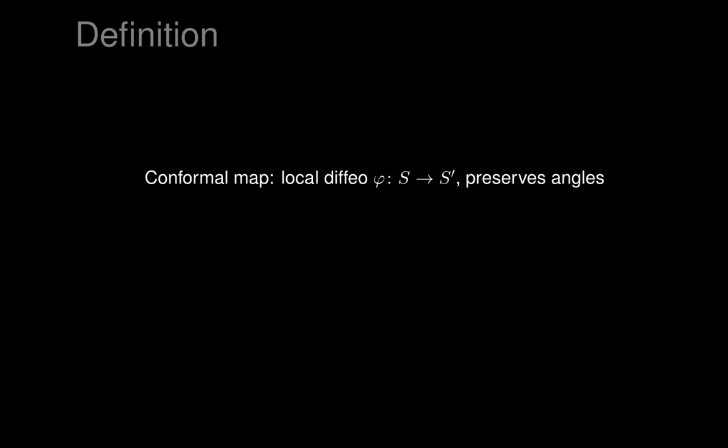So first, what is a conformal map? A conformal map between surfaces means a local diffeomorphism of the surfaces which preserves angles. By preserving angles I mean if you draw two curves on S that meet at some angle at some point and you throw them through the map phi to produce curves on S prime, then the angles between those curves at the corresponding point should be exactly the same as the angle between the original curves at the original point. So matching up of angles.